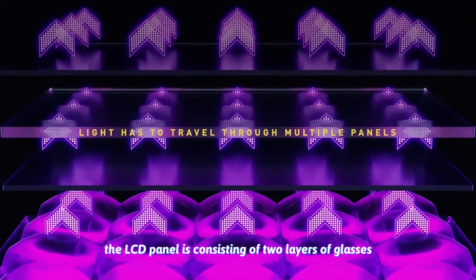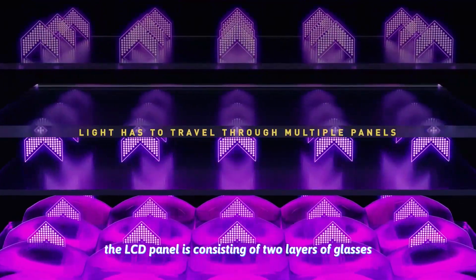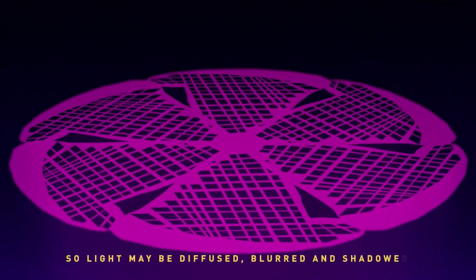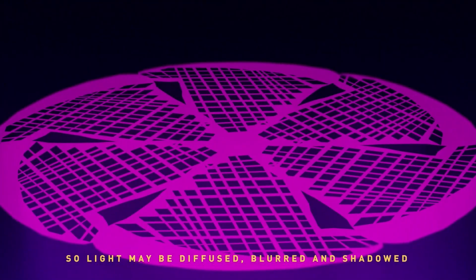The LCD panel consists of two layers of glasses with the liquid crystal in between, so the light may be diffused, blurred, and shadowed.